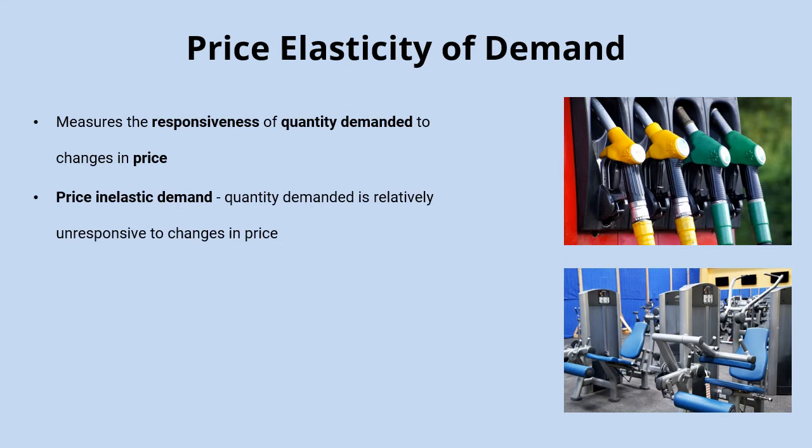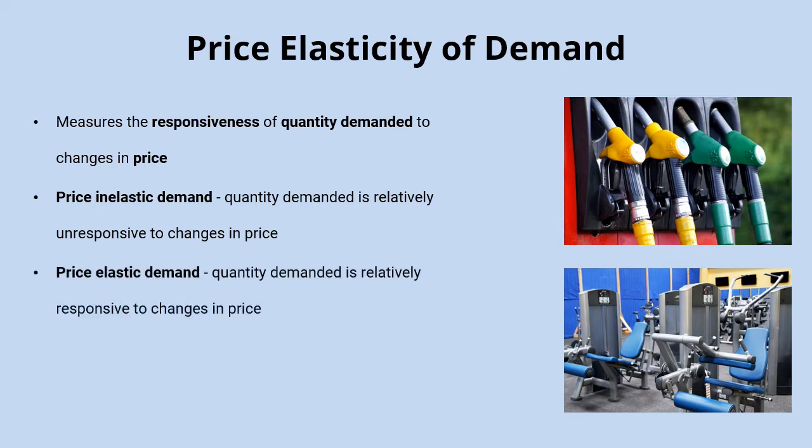The terminology we use when talking about products with different price elasticities: we describe products as having price inelastic demand if quantity demanded is relatively unresponsive to changes in price. Think about petrol — if the price went up by say 10%, the quantity demanded might only fall by a few percent. We'll look at some reasons for why that might be the case in a minute.